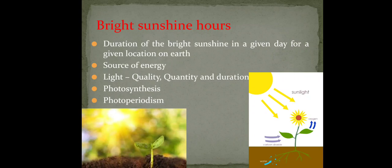Before discussing the instrument, what is the importance or role of sunshine in agriculture? By measuring the sunshine you know how long you are getting sunshine in a particular place and how much sunshine is available during different parts of the year. Crop selection can be based on that, and sunshine is the main source of energy and light.